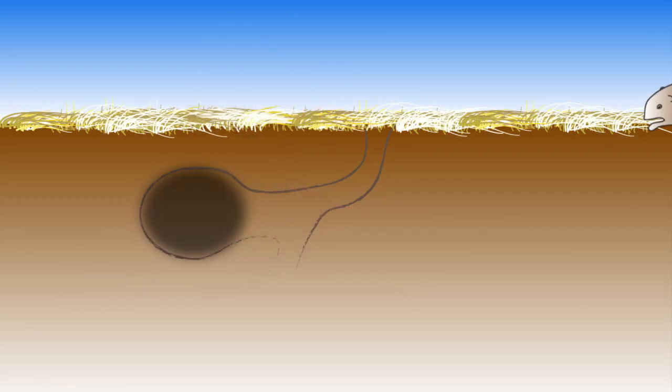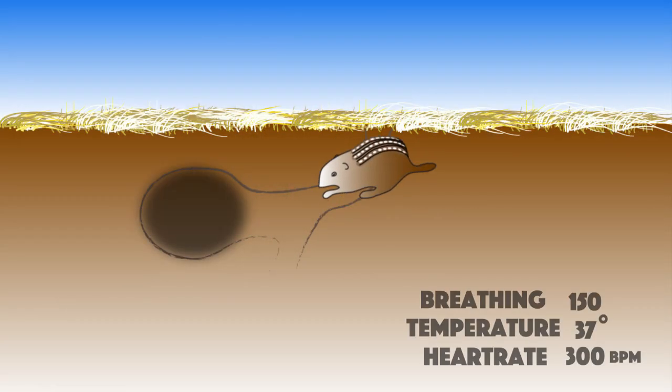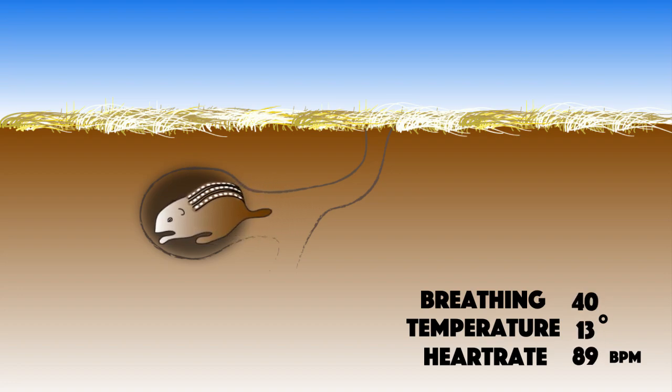During hibernation, which begins in late summer or early fall, squirrels decrease their metabolism. They drop their heart rate, their breathing rate to just a few a minute, and decrease their body temperature to four degrees centigrade.